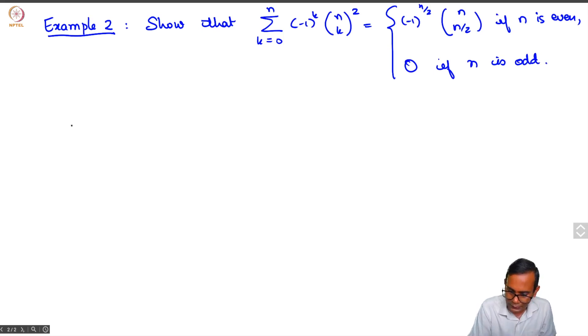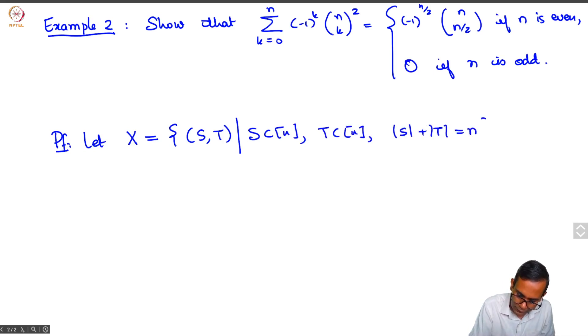What we will do now is again define a sign associated to elements which are counted by this set. Let x be the set of all collections s comma t such that s is a subset of n, t is also a subset of n, and the cardinality of s plus the cardinality of t is equal to n—that is, s and t have complementary cardinality in n. I'm not saying that they are complementary sets, just that their cardinalities are complementary. Then we define sign of s comma t to be minus 1 raised to cardinality of s.